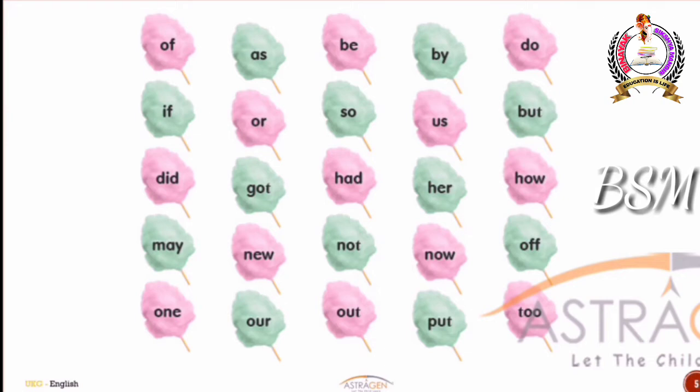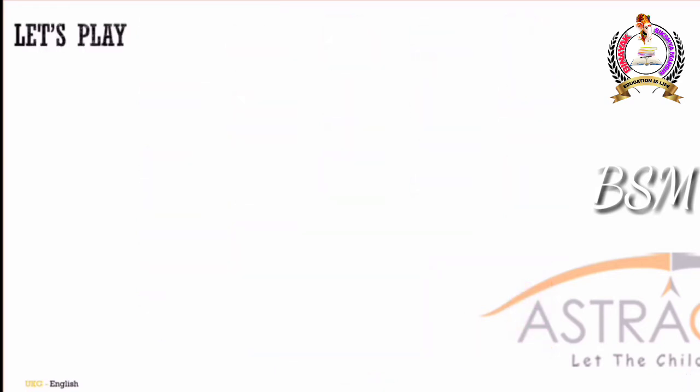We have to read the sight words over and over again. Sight words have to be displayed around so that you can see, observe the letters, and memorize them. Now let us play a game. You will see a colorful snake in the next slide, and you have to sing along. The song is: Tic-Tac-Toe, round I go. If I stop, I read this.